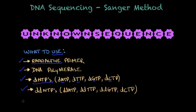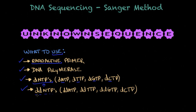The key thing here is this fourth element: the ddNTP. This is a chain termination block that you're going to use in the Sanger method. This dideoxyribonucleotide triphosphate is very similar to the deoxyribonucleotide triphosphate, but these ones will terminate the sequence or the chain when it's being replicated. We're going to see later on how these work.